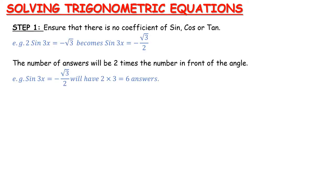Step 1: make sure there is no coefficient of sin, cos, or tan. For example, 2·sin(3x) = -√3 becomes sin(3x) = -√3/2 after dividing both sides by 2. We do this just as in algebra — to isolate the trig function, divide by any coefficient.